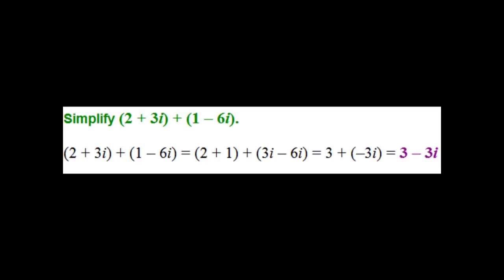When adding complex numbers, you must remember to add like terms. Add the real numbers together, and then add the imaginary numbers together. You should be adding 2 with 1, and 3i with negative 6i, getting an answer of 3 minus 3i, which is in a plus bi form.